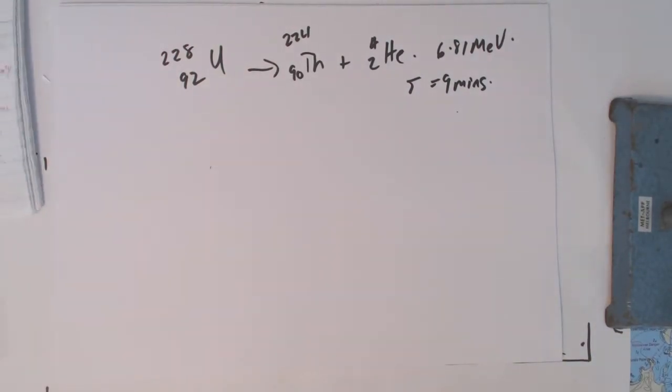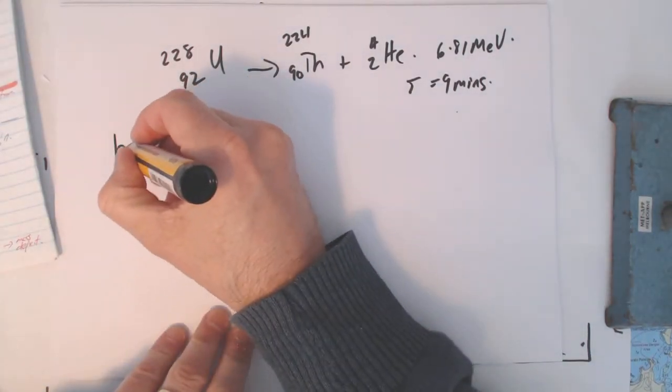And so similar reaction, different isotope, remember those words, different isotope. So that's two types of alpha decay.